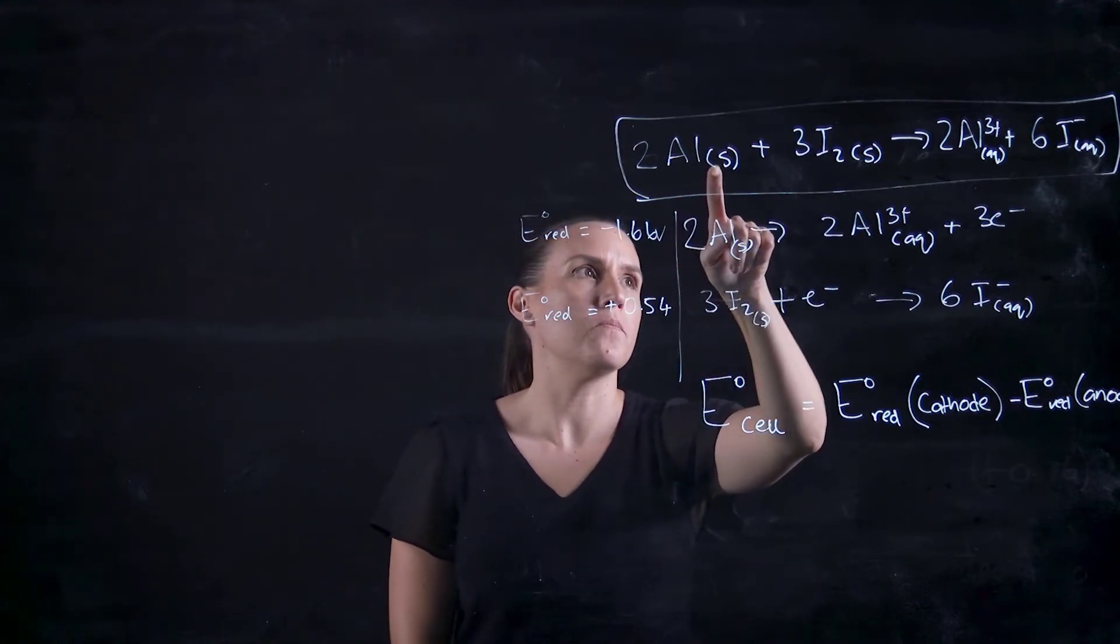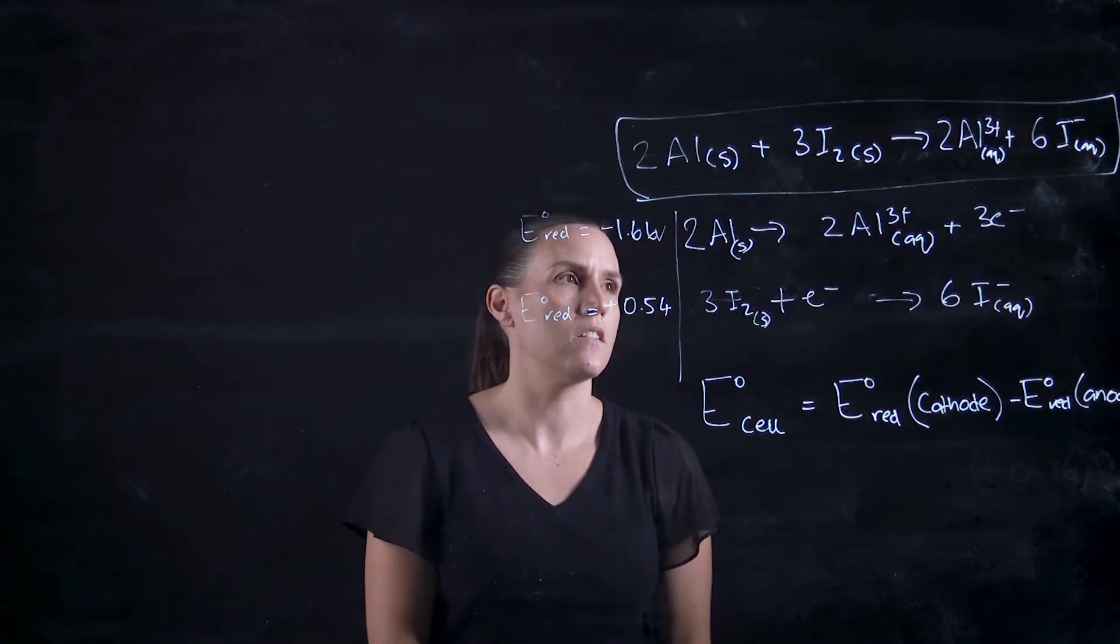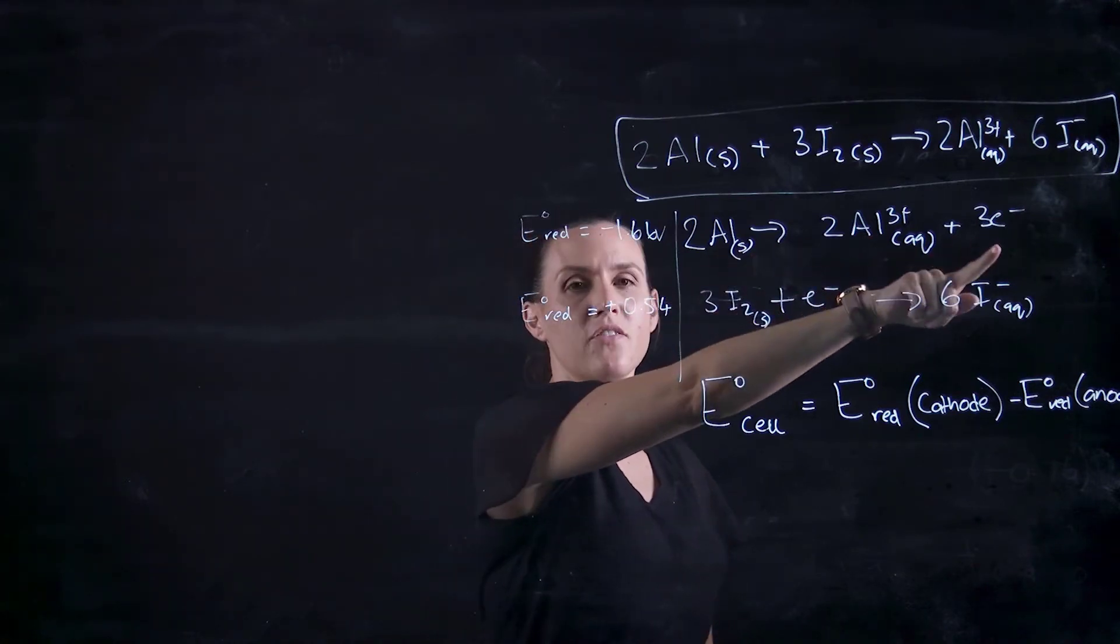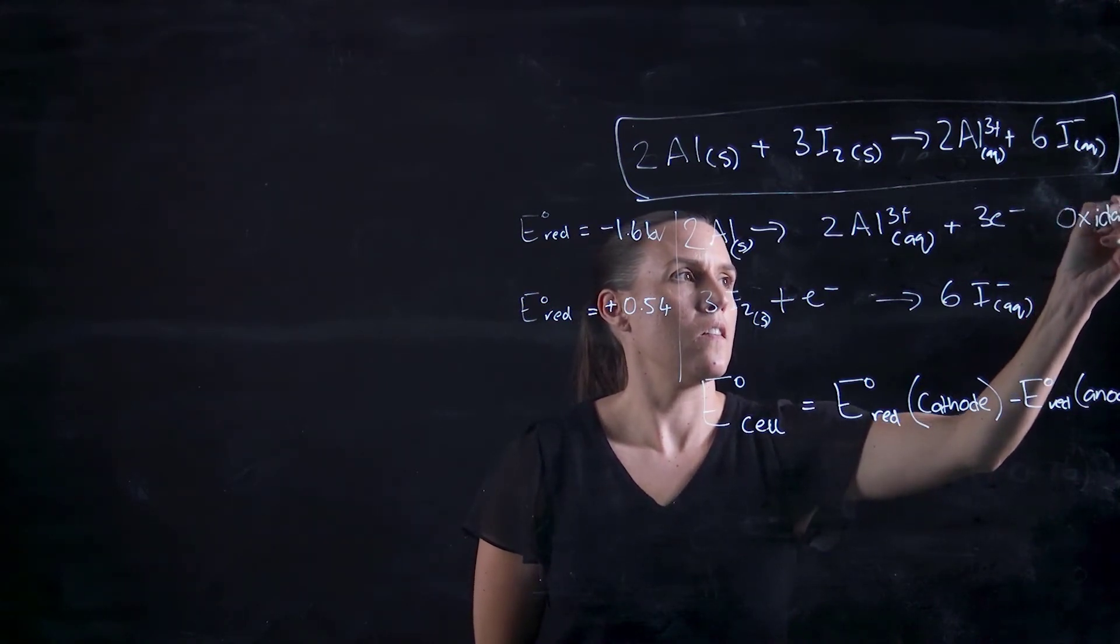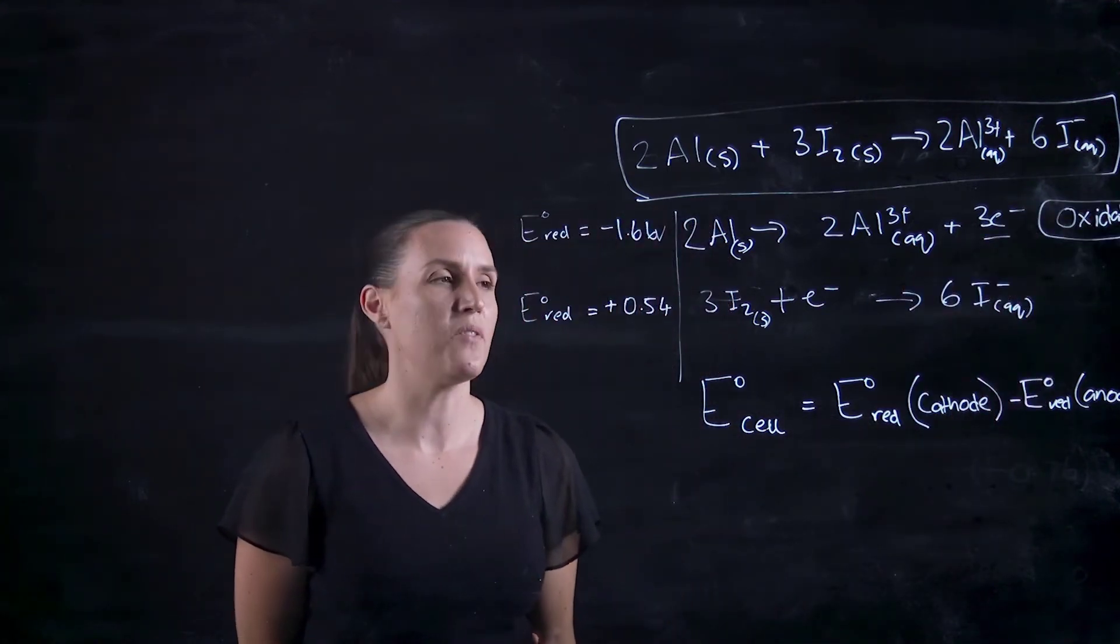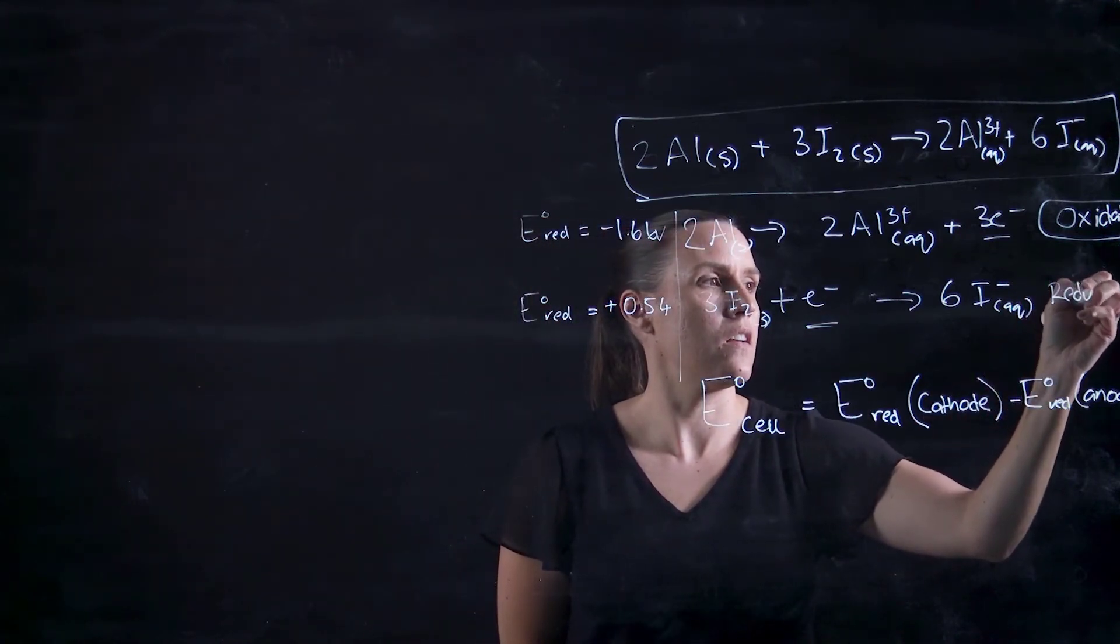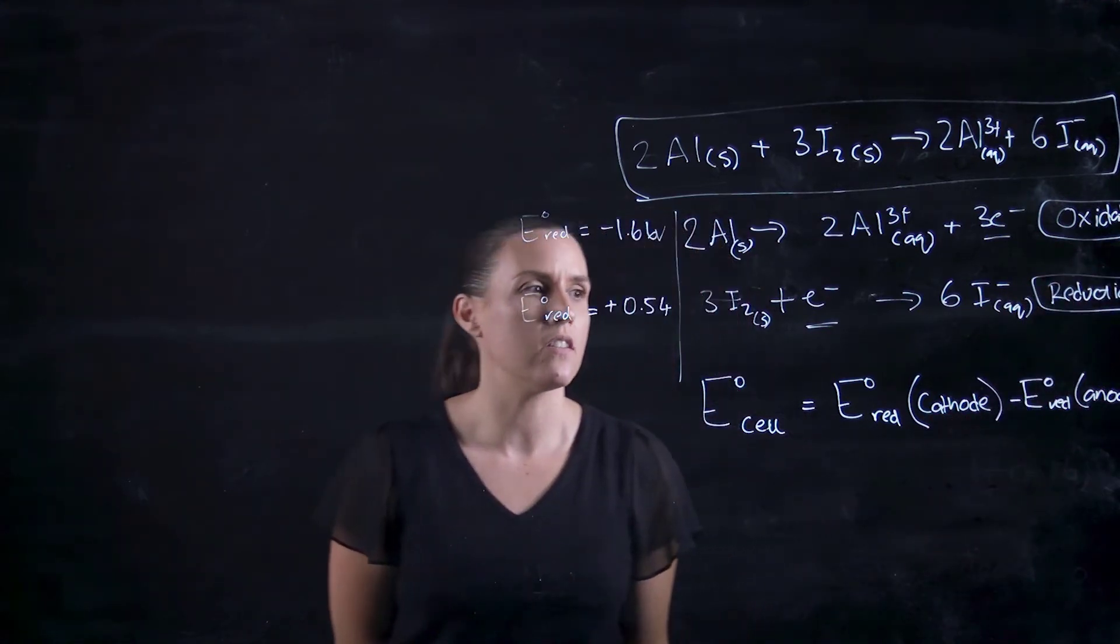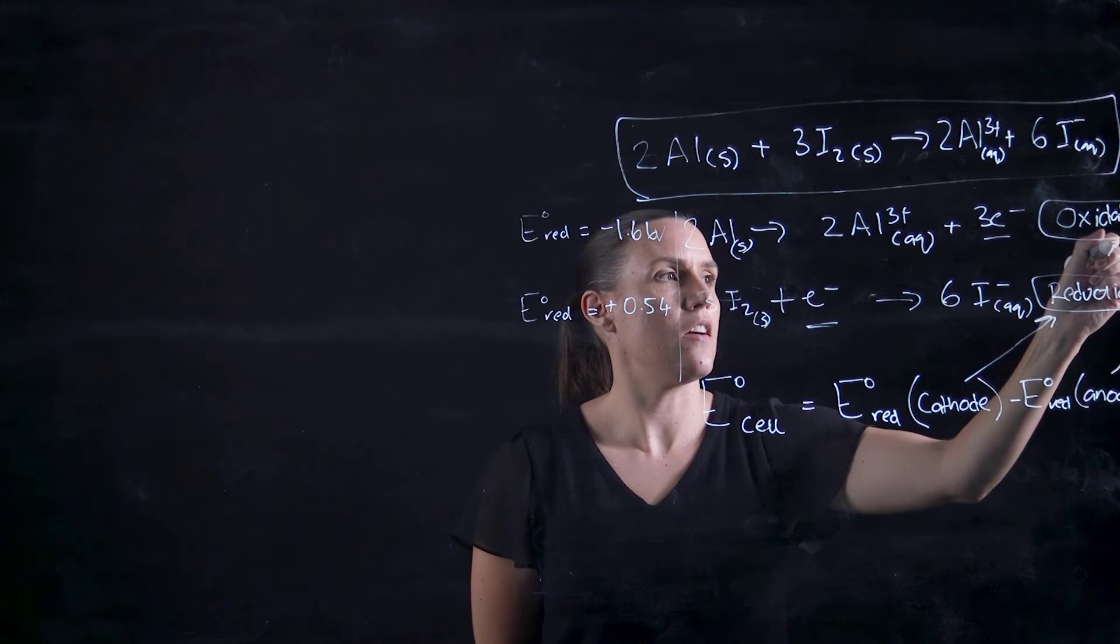We've got aluminum going to aluminum three plus, so we're losing electrons - this is oxidation. Oxidation is loss, so we've got the electrons being lost in that one, and reduction is the gain of electrons, so this is my reduction. Remembering which one's the cathode and which one's the anode - the cathode is the reduction and the anode is the oxidation.